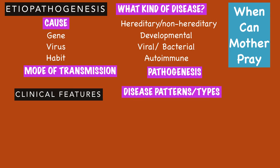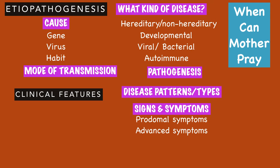After writing the disease patterns, write down the signs and symptoms. Signs are what you identify in the patient; symptoms are what the patient presents with. Under symptoms, classify them as prodromal and advanced — prodromal symptoms appear at the onset of the disease, while advanced symptoms occur in the later stage.